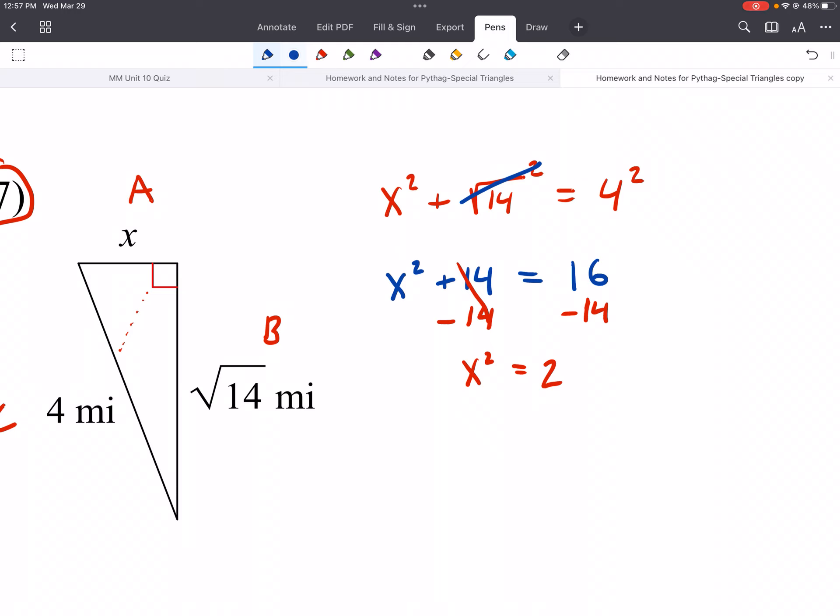So we would get X squared equals 2. And then next would be multiplication or division. But you won't be having any of that with the Pythagorean theorem. There's no parentheses. But there are exponents. So we'd want to, I guess exponents are first anyways. We'd get X equals the square root of 2. And that's your answer, right? That can't be simplified. We don't want decimals. So we're all done.